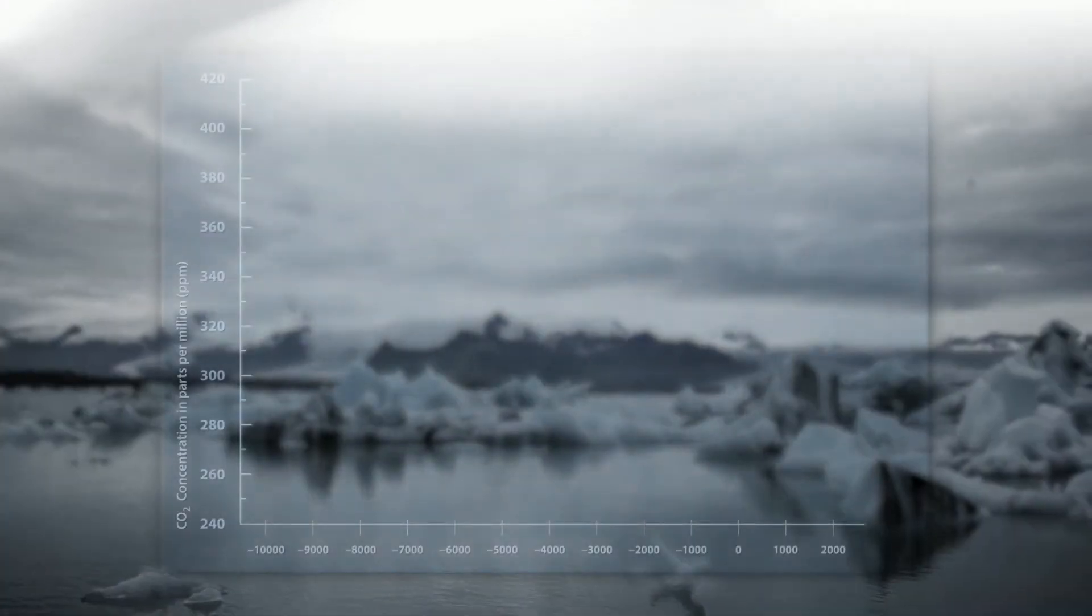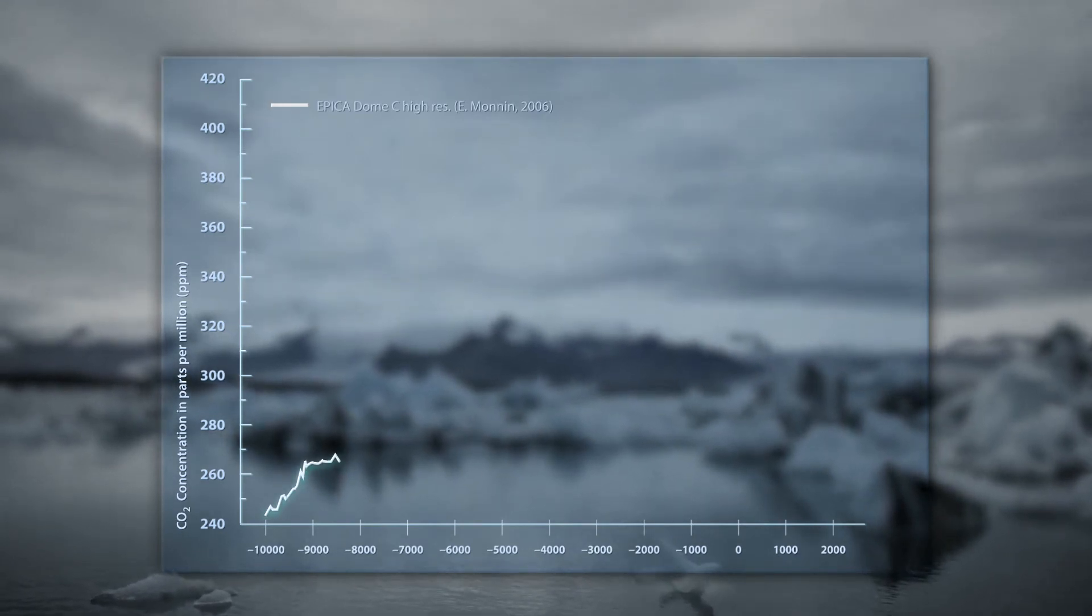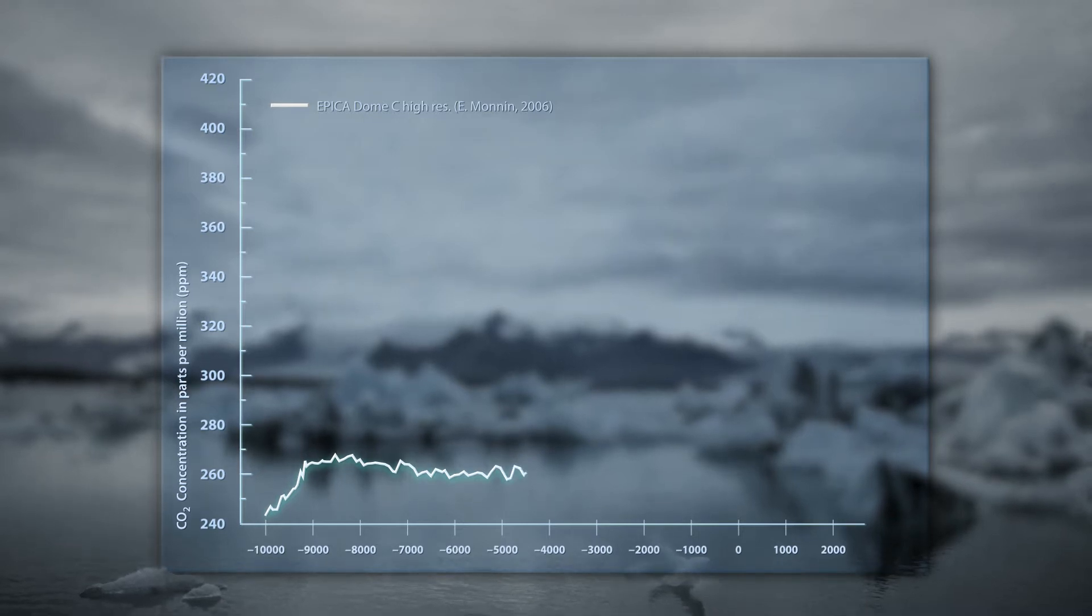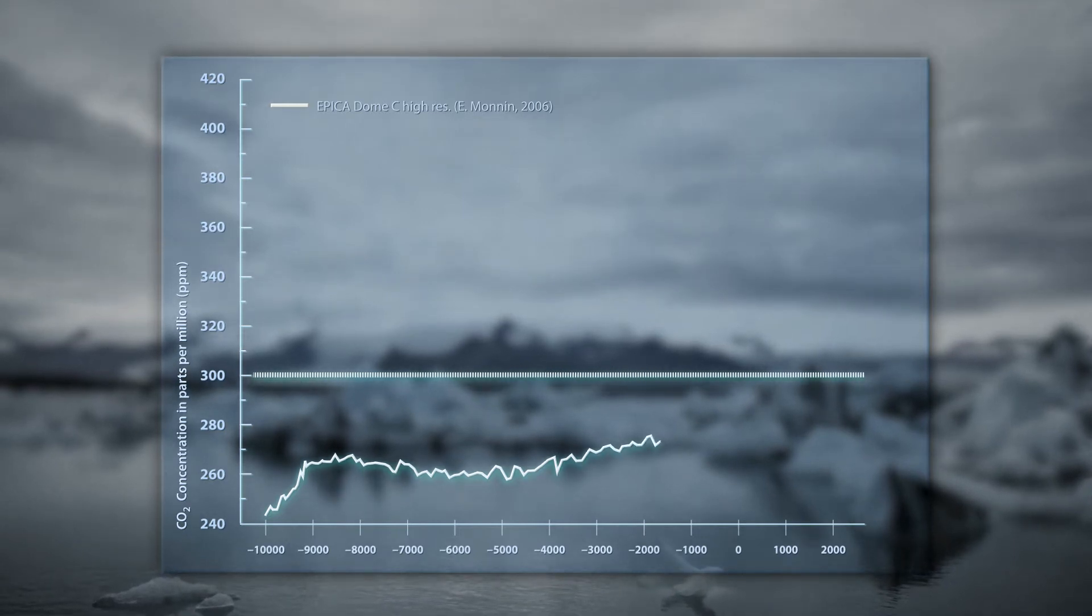The natural CO2 content in the atmosphere has hardly fluctuated since the last ice age. Ten thousand years of human history transpired within a stable climate. During this period, there were never more than 300 particles of CO2 per 1 million other particles in the atmosphere.